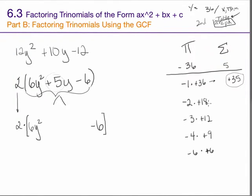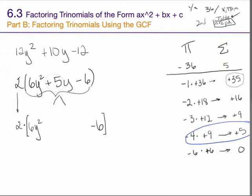We need to find the pair that gives us positive 5 when added together. And here it is — negative 4 times positive 9 is the combination that works. So I can rewrite 5y as negative 4y plus 9y, or if you prefer, as plus 9y minus 4y. It doesn't matter which order they go in. Now I can carry on factoring by grouping.